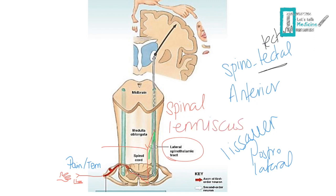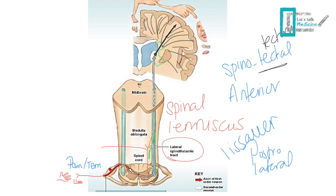The spinal lemniscus moves within the brainstem, and at the level of the midbrain, the lateral and anterior spinothalamic tract go to the thalamus and synapse with the third order neuron in the ventroposterolateral nucleus — the same nucleus that the dorsal column synapses with. The third order neuron then leaves the posterolateral nucleus of the thalamus and passes through the posterior limb of the internal capsule, where nerve fibers are joined tightly, before spreading as corona radiata to reach different sensory areas of the cortex.